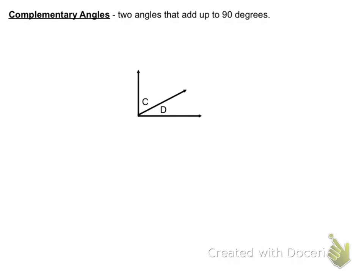Complementary Angles are two angles that add up to 90 degrees. So Angles C and D in this picture both add up to 90 degrees. Complementary is similar to Supplementary in that it has to have only two angles that add up to that measure.